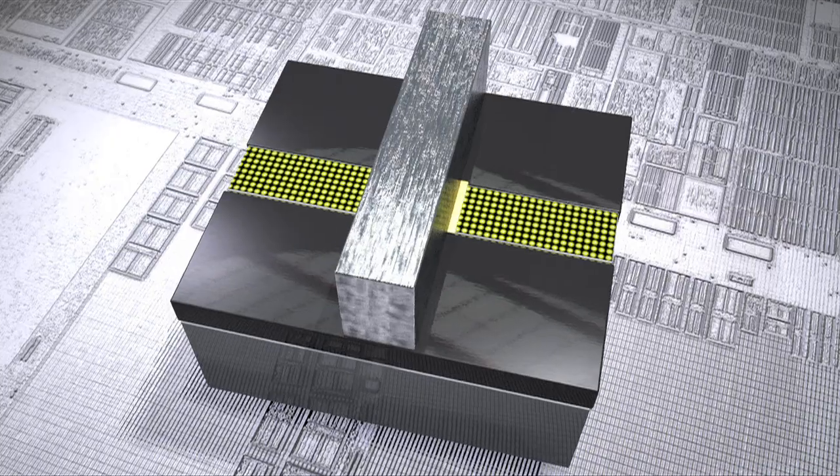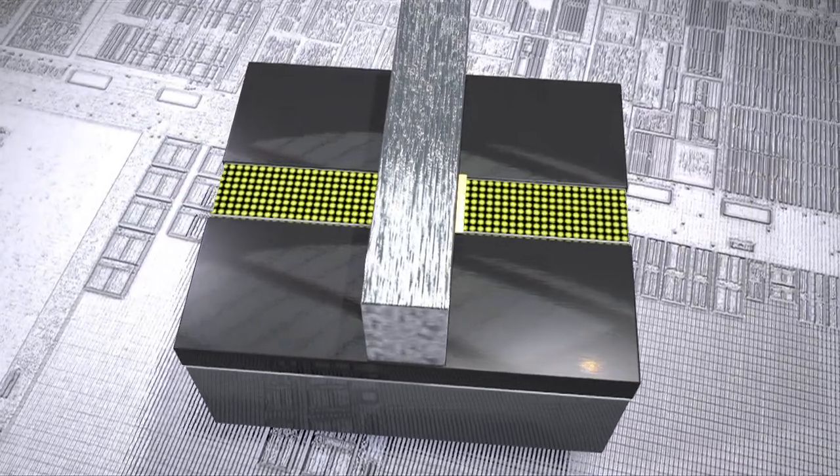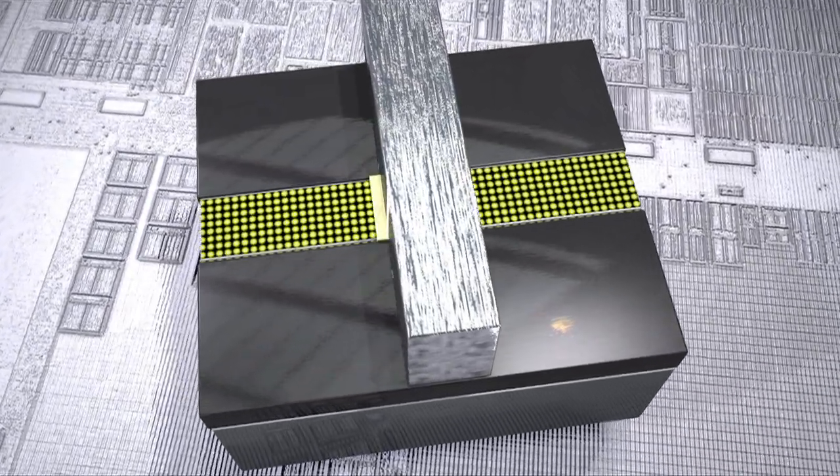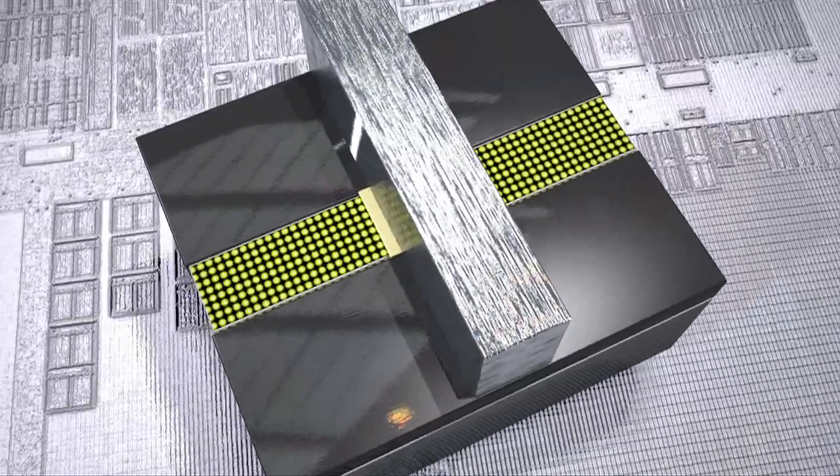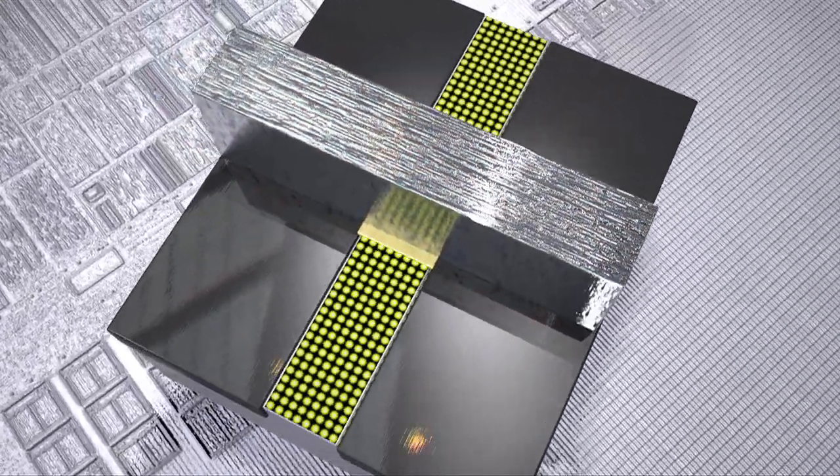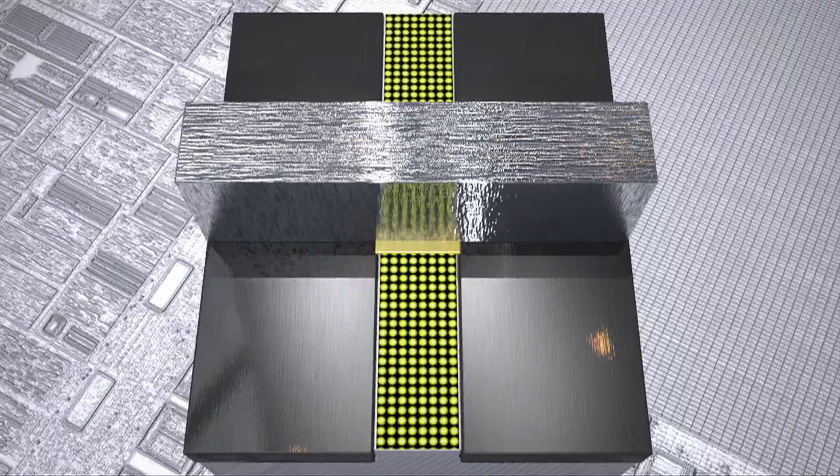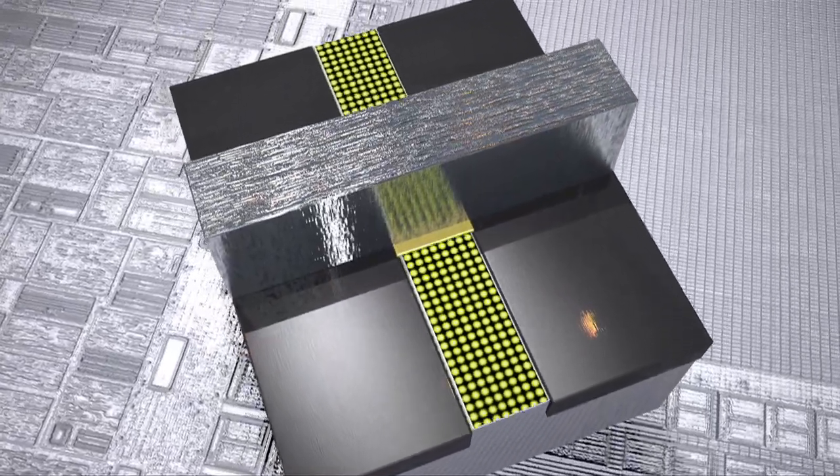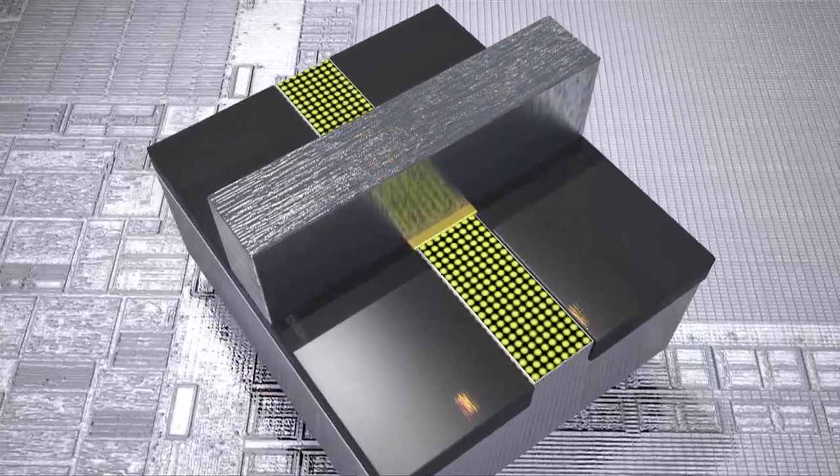The gate, which is made of metal over a high-K insulator, controls the flow of electricity in that stream. It acts as an ordinary switch, turning flow on and off. That is, if an ordinary switch had the ability to turn itself on and off over 100 billion times a second.